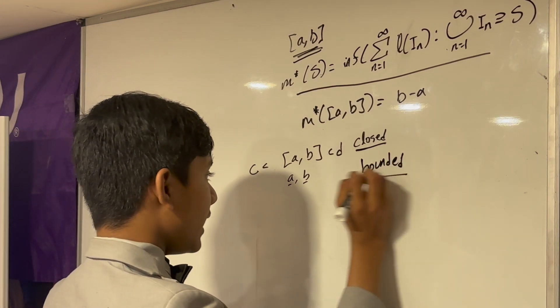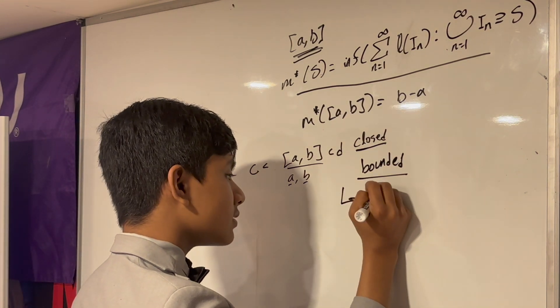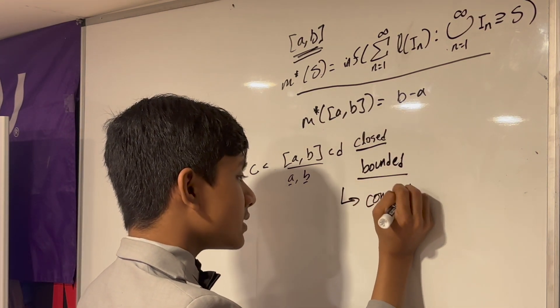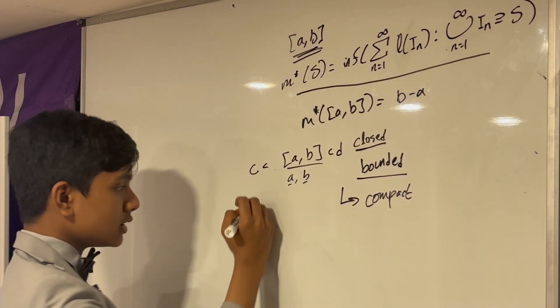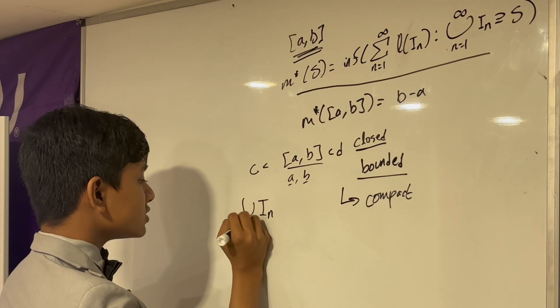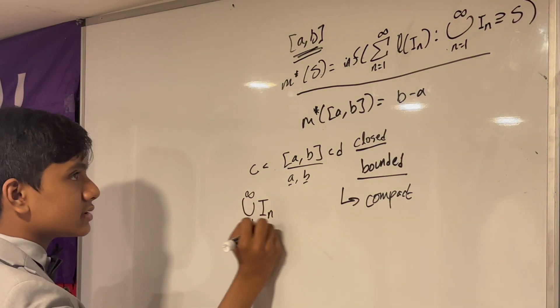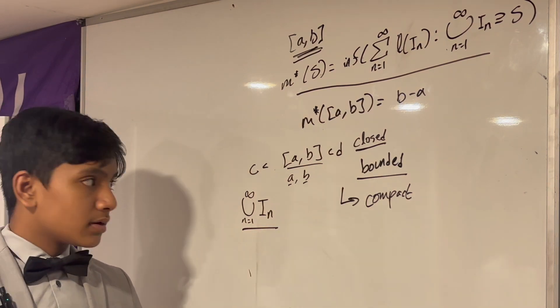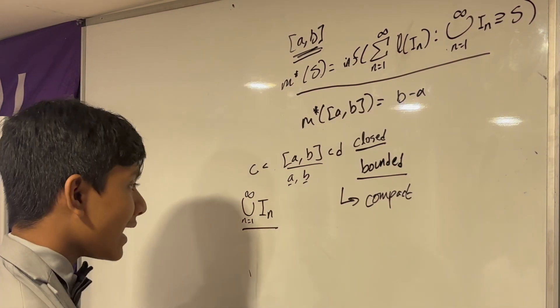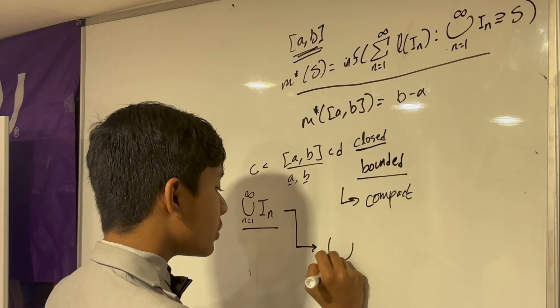So [A,B] is closed and bounded, by the Heine-Borel theorem. Hence, it's compact, which means that for any open cover, so I'm going to take a bunch of open intervals I_n such that I_n cover this interval [A,B], and for any open cover, we can find a finite sub-cover.